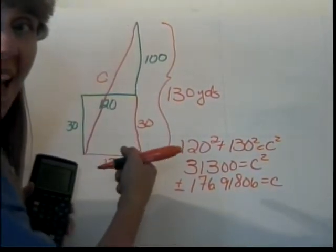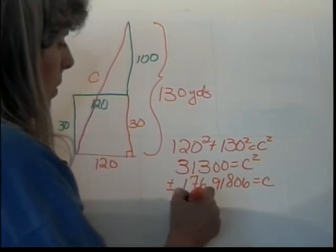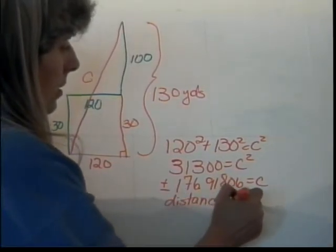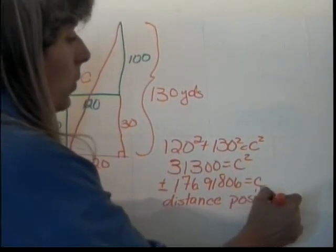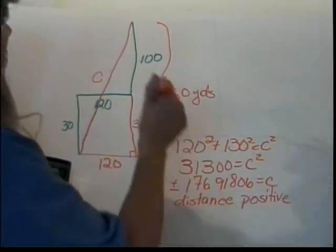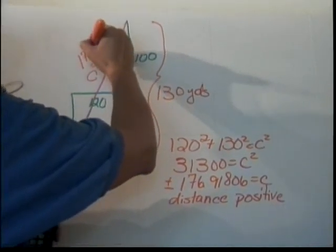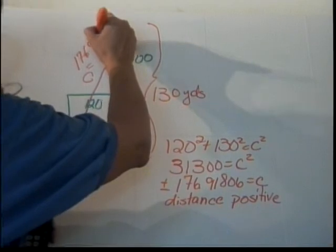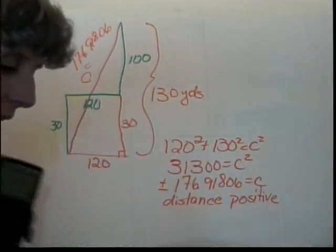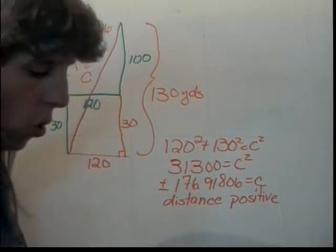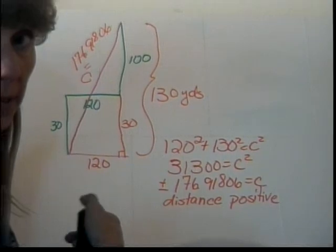But, I'm talking about how far I walked. That's a distance. And, distances are always positive. So, since I only have a distance and it's positive, then, my C must be 176.91806. And, that's going to be our last example for areas and perimeters. And, we threw in the Pythagorean theorem a couple of times.